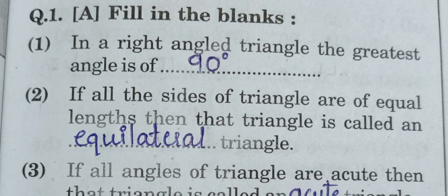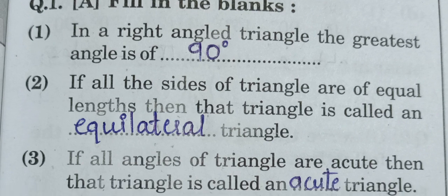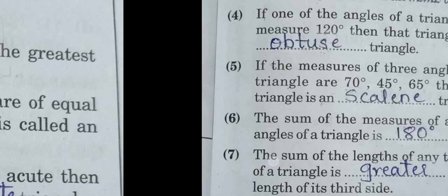Now let us proceed with the revision. First question is fill in the blanks. First one: in a right angled triangle the greatest angle is of 90 degrees. Second: if all the sides of a triangle are of equal length then that triangle is called an equilateral triangle. Third: if all the angles of a triangle are acute, then that triangle is known as an acute triangle.